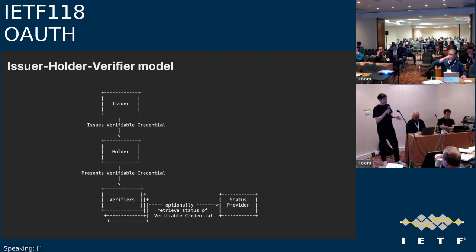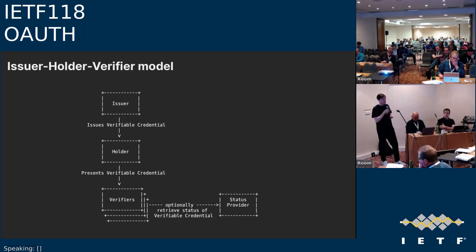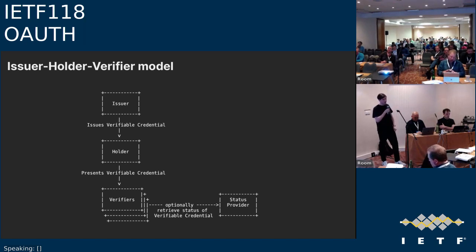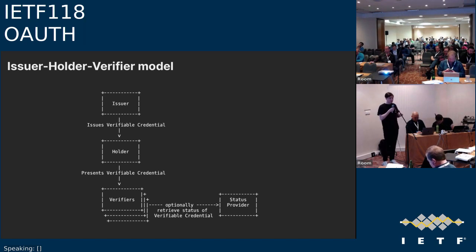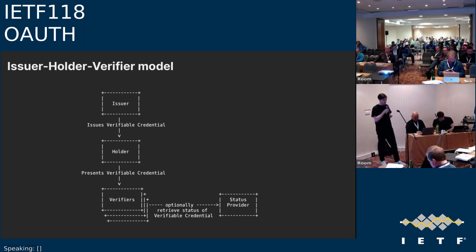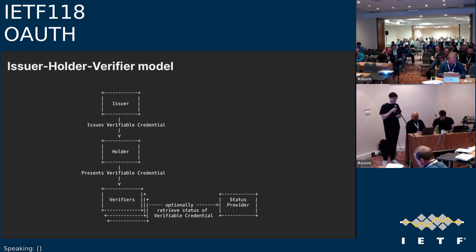This is useful in the issuer-holder-verifier model. In this model, verifiable credentials are issued — signed attestations containing claims about the subject, optionally bound to a key — that can be sent amongst participants. The issuer issues a credential like a driver's license to the holder, and the holder can then present the driver's license to verifiers. The holder can optionally apply key binding, and there's also a status provider where you can optionally check the status of a credential.